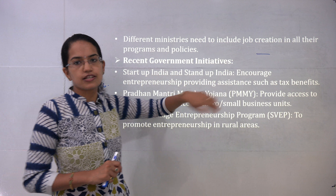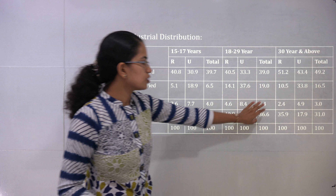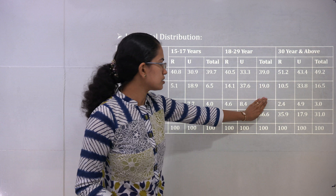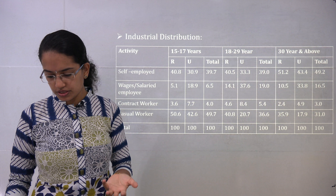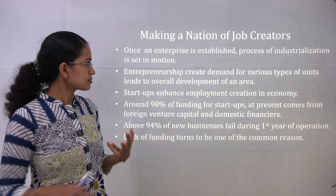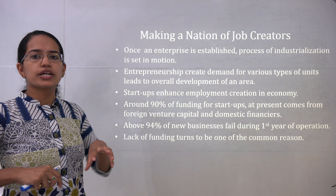Looking at the industrial distribution, comparing age groups 18 to 29 and 30-plus, the youth are less self-employed than the middle-aged group, but much higher in salaried employment, contract work, and casual work. What needs to be focused on is self-employment — creating more startup companies and small-scale industries that can further provide employment to more people.